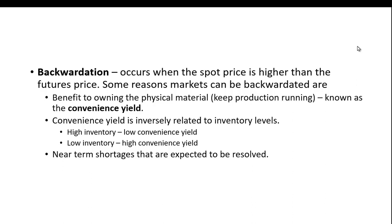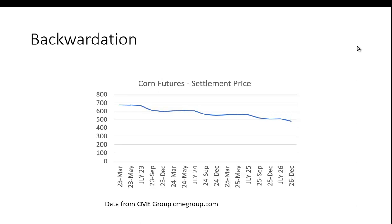A backwardated market can happen because you have near-term shortages that are expected to be resolved. For example, you may have a hurricane that hits the Gulf Coast and knocks out a lot of oil refineries, so futures for oil or gas may go up, but we expect that to be resolved and so the futures price tends to be lower. Here I went back to the CME Group and got corn futures. You can see it's fairly consistent that we have a higher price for March 2023 delivery than for December 2026 delivery — this is a backwardated market. Sometimes we say this curve is inverted. It's not as common as contango, but you can certainly see it happening from time to time.